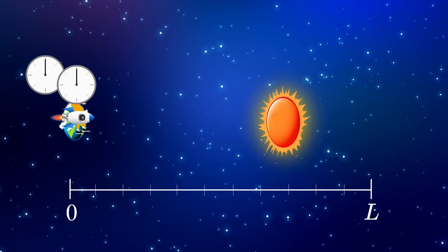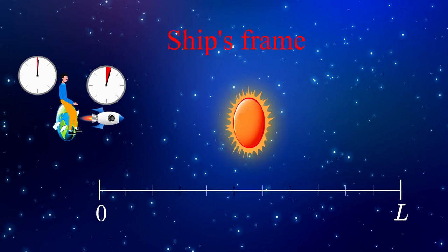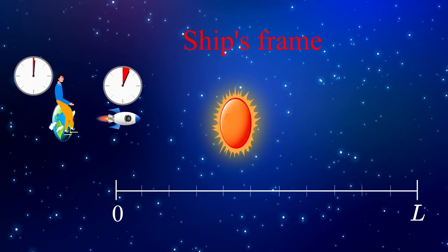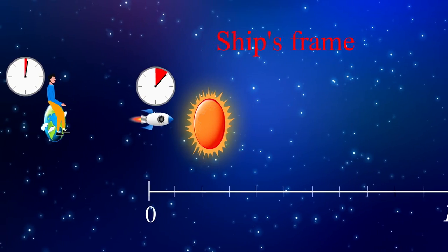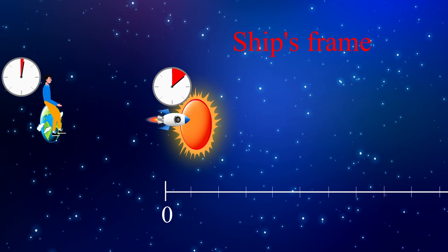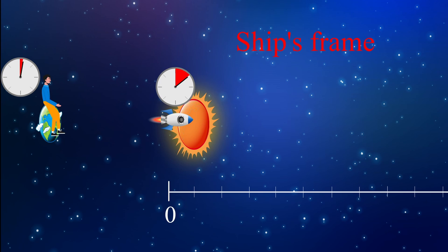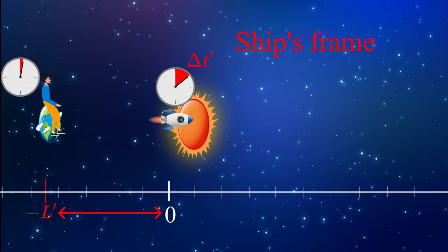For the moving observer, he can equally claim to be at rest — his clock must tick normally for him and the clock on the planet should slow down. The only way he could reach the destination in the lower time t-prime as measured from the planet is due to the length contraction of the distance between the planet and the star.